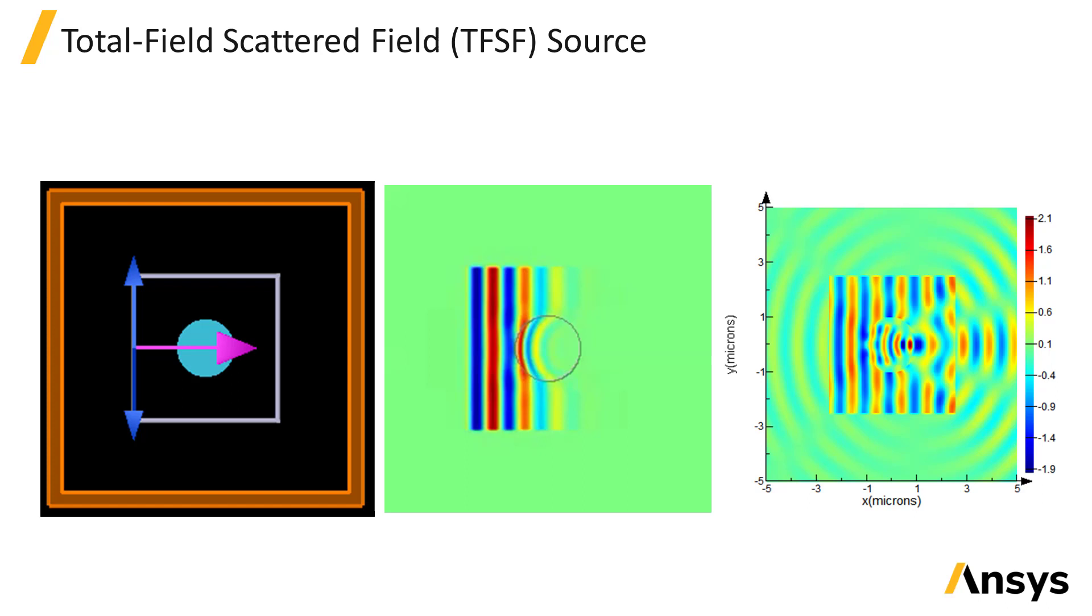The Total Field Scattered Field, or TF-SF source, injects a plane wave with finite span and separates the computation region into two regions.